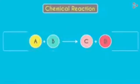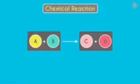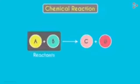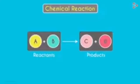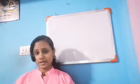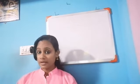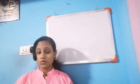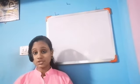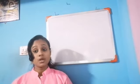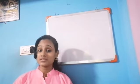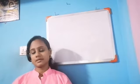The substances taking part in a chemical reaction are called reactants. After the reaction, we will get a new substance that is called products. Reactants react to form products. So what is chemical reaction? Any chemical change in matter which involves transformation of one or more substances with entirely different properties is called a chemical reaction.